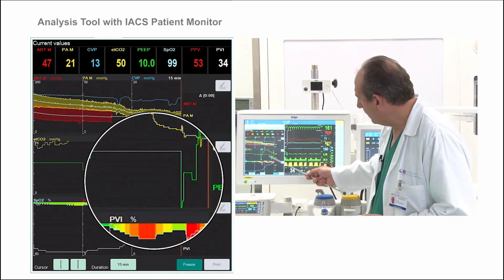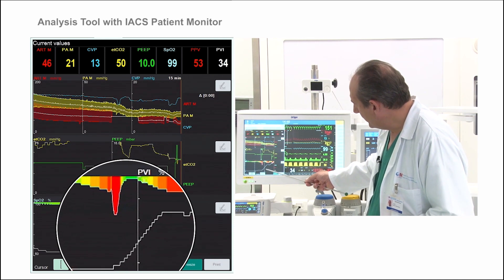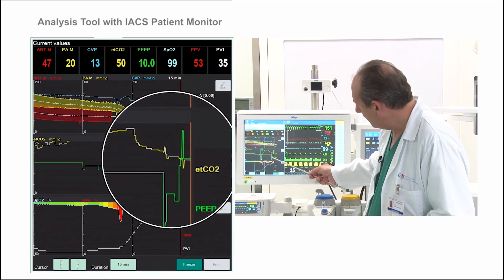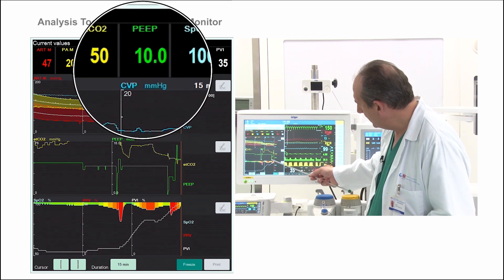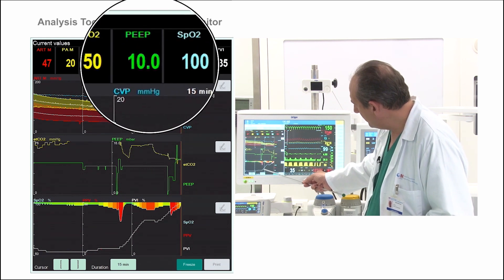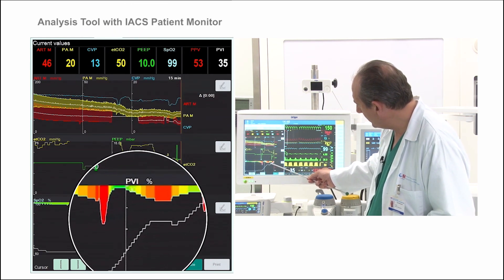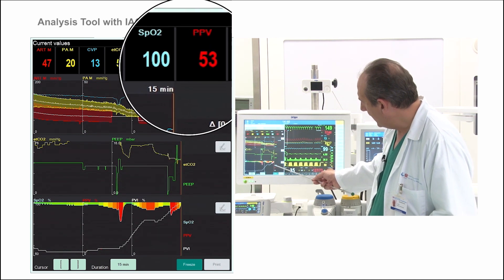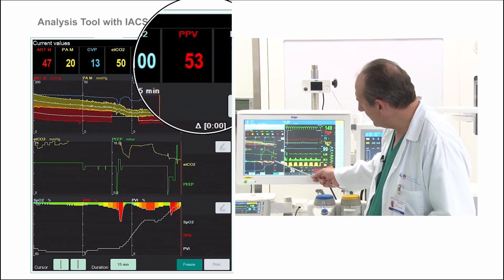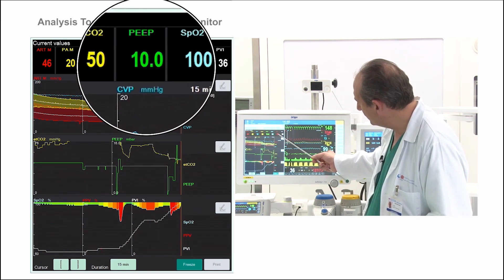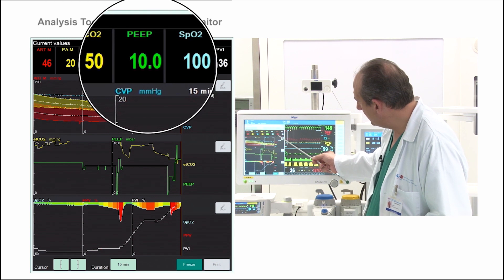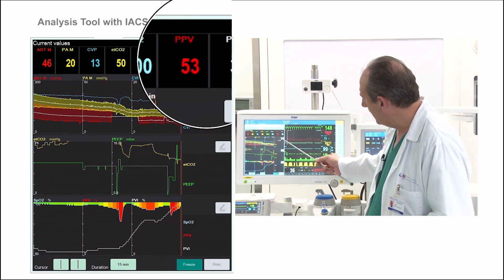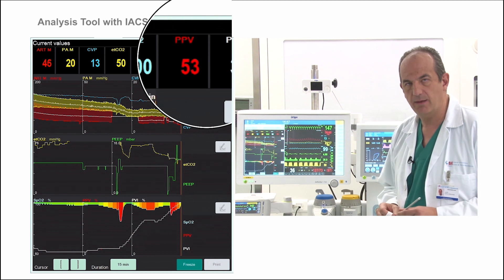...five, ten, fifteen — see how PVI is going up, and PPV is increasing. And only with a PIP of ten, PPV increased up to fifty-three, and PVI up to thirty-seven.